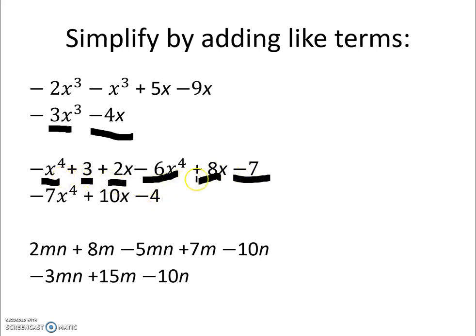So when we combined all these like terms, we ended up with a negative 7x to the 4th plus 10x minus 4. Continuing to add like terms...